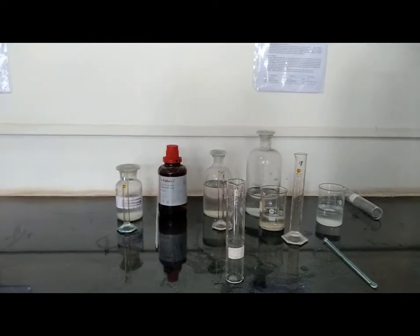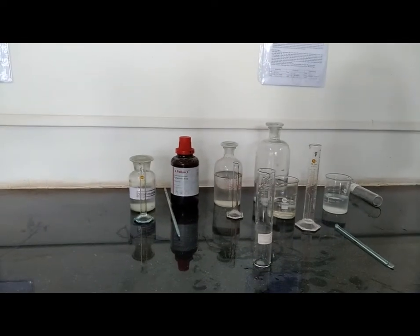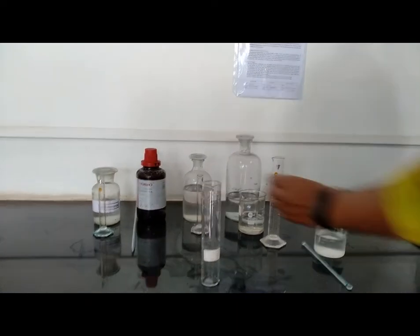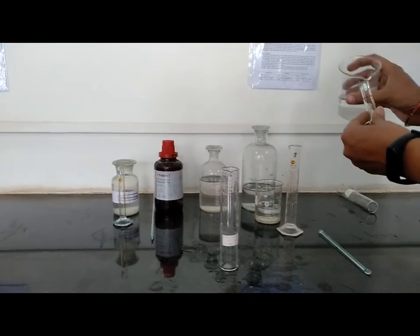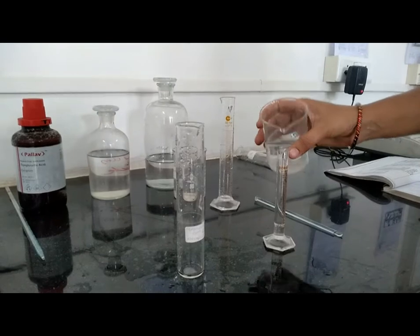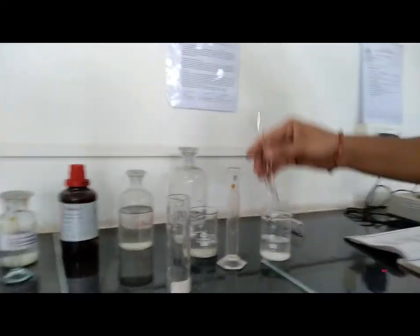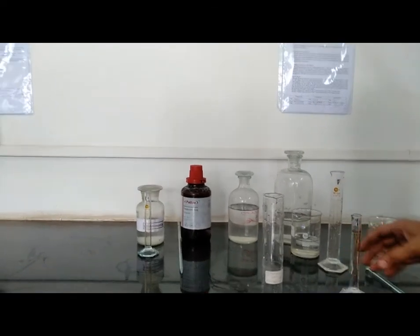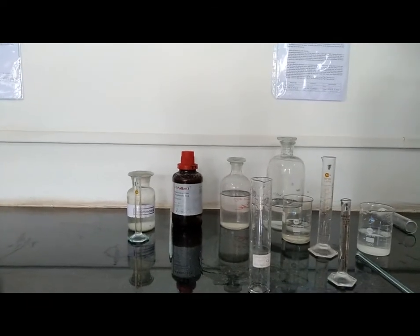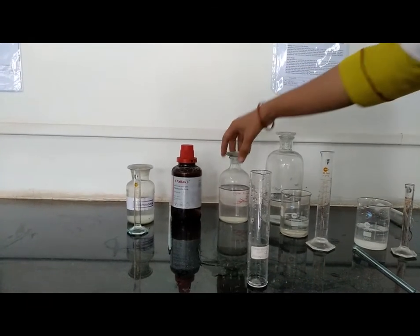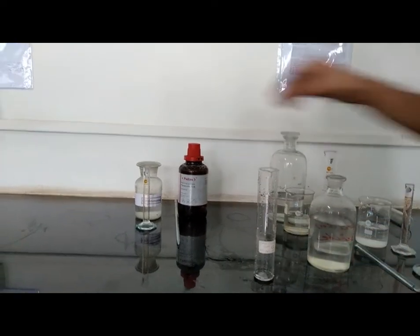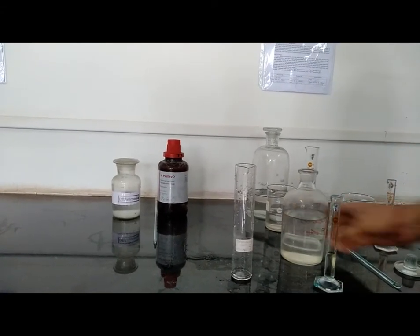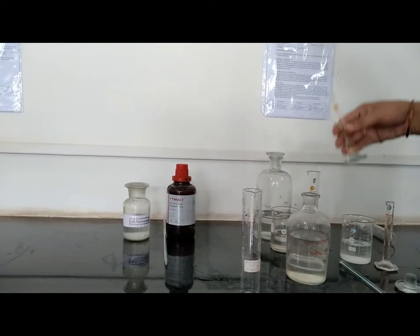Take 2 ml of iron standard solution. This is our iron standard solution which is freshly prepared. Take 2 ml of iron standard solution. Then add 2 ml of iron standard solution into the Nessler cylinder.